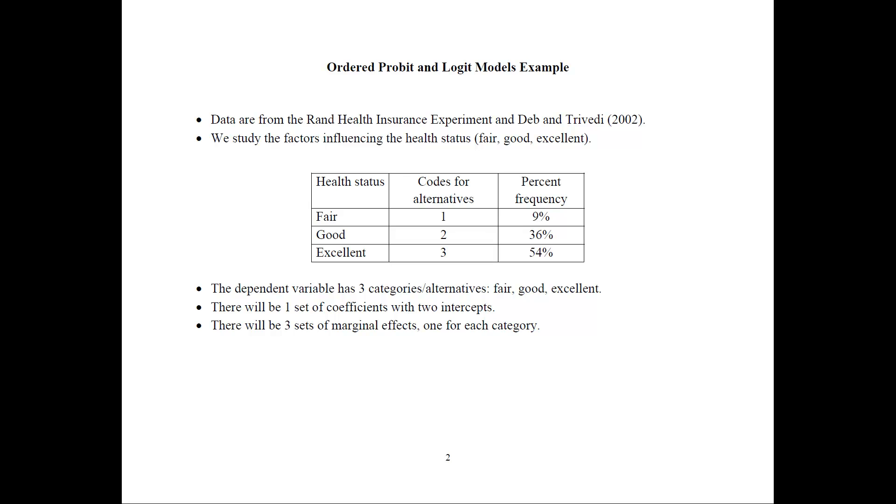With three dependent variable categories, we would be having one set of coefficients and we would have two intercepts separating those three categories.